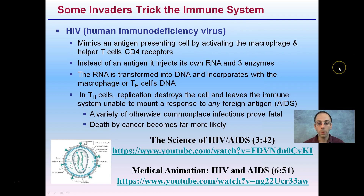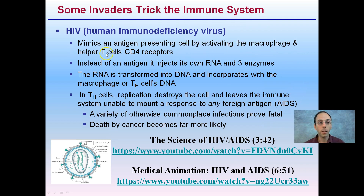The first one is probably the most obvious and one you're probably most familiar with: HIV, human immunodeficiency virus. What this basically does — and I have two great links in the description you're welcome to click — is mimic antigen-presenting cells by activating the macrophage and helper T-cell CD4 receptors. So instead of an antigen, it actually injects its own RNA and three enzymes.